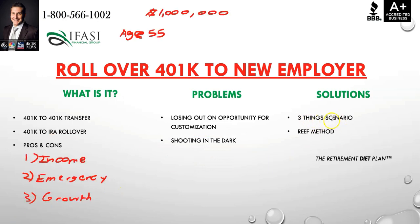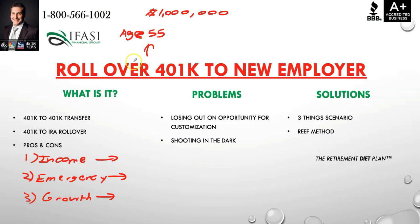I want to discuss a couple of strategies people can use most effectively. The first type is something known as the three-things scenario: how can you use the smallest amount of dollars — only as much as necessary — towards each area most effectively? The first thing you want to make sure it accomplishes is your income strategy.